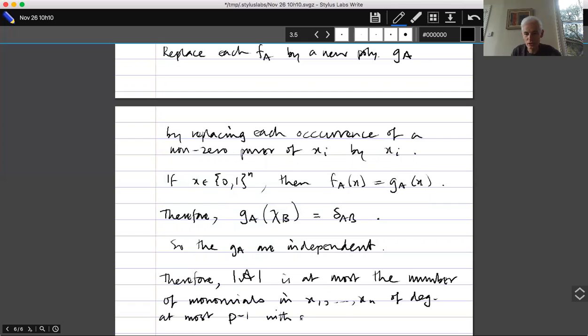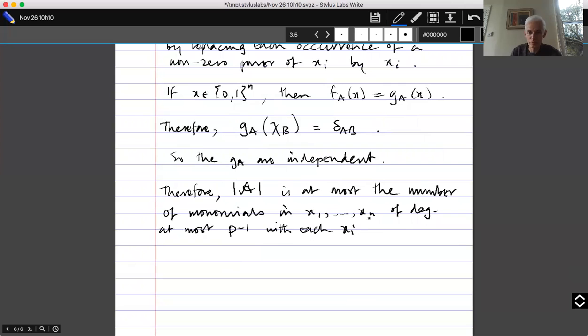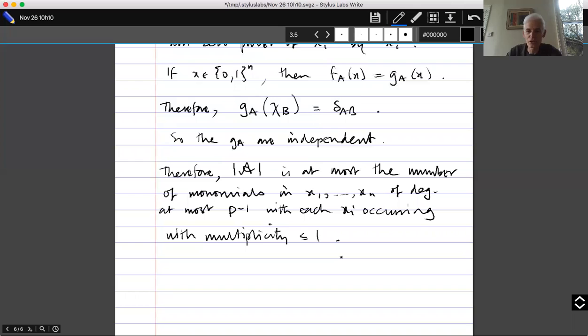With each x_i occurring with multiplicity at most one, otherwise known as multilinear monomials, because that'll be the dimension of the space of polynomials that everything lives in. And how many of these are there? Well that's easy enough. That's just the number of subsets of—well at most the number of, well actually exactly the number of subsets of 1 to n of size at most p minus one.